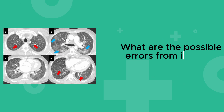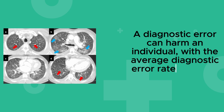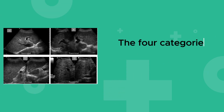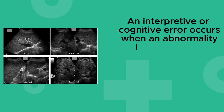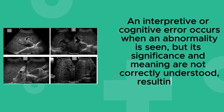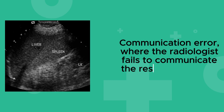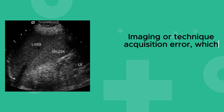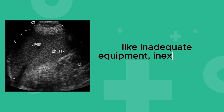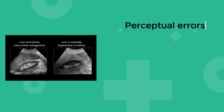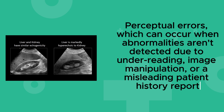What are the possible errors from imaging diagnosis? A diagnostic error can harm an individual, with average diagnostic error rates ranging from 3% to 5%. The four categories of errors include: an interpretive or cognitive error, where an abnormality is seen but its significance is not correctly understood, resulting in an incorrect diagnosis; a communication error, where the radiologist fails to communicate results effectively; an imaging or technique acquisition error, due to physical or technical limitations like inadequate equipment, inexperienced staff, or staff shortage; and perceptual errors, which occur when abnormalities aren't detected due to under-reading, image manipulation, or a misleading patient history report.